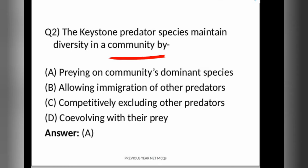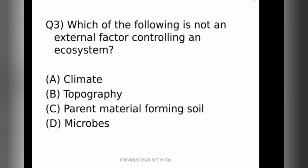So let's move on to the third question. Which of the following is not an external factor controlling an ecosystem? The options are climate, topography, parent material forming soil, or microbes. The correct answer is microbes. So microbes are the internal factors controlling an ecosystem. They are not the external factor. So the correct option is option D.